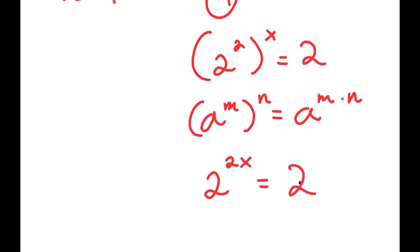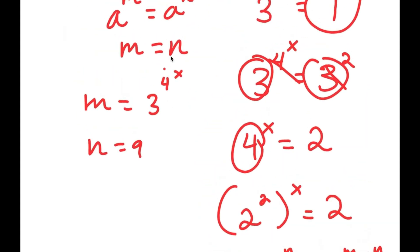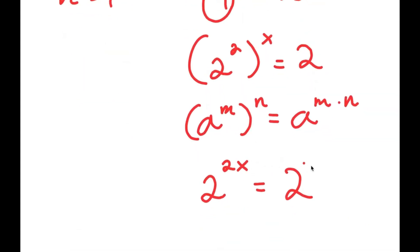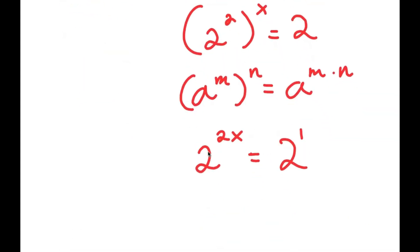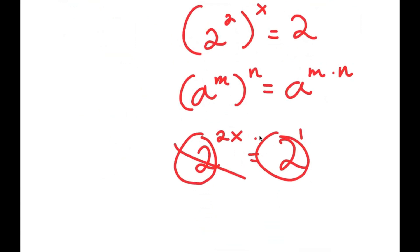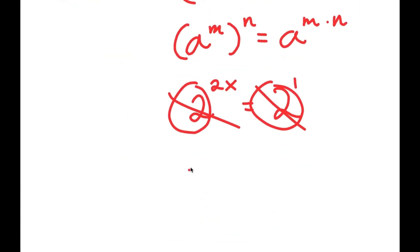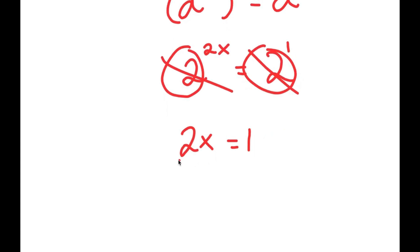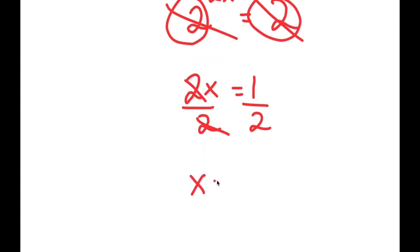Now I'm going to use this property again. 2 is the same thing as 2 to the power of 1. So because these two bases are the same, I get 2x is equal to 1. And if I divide both sides by 2, these two cancel out and I get x is equal to 1 half.